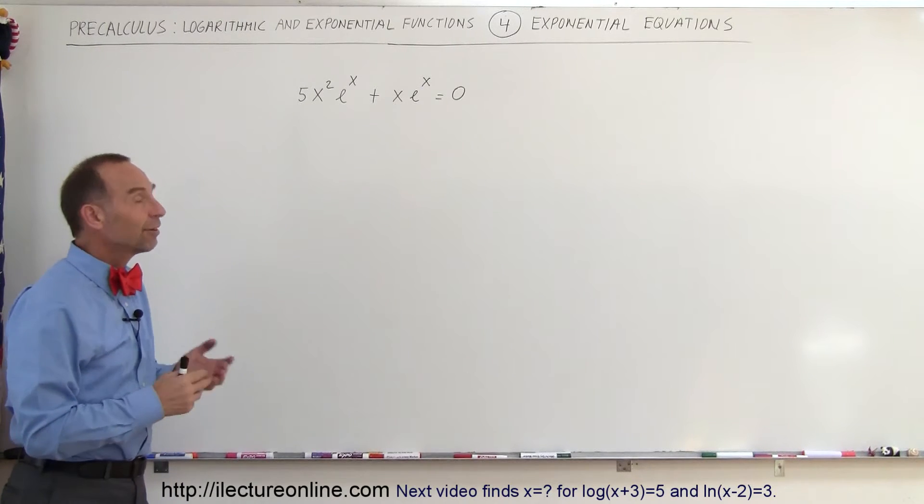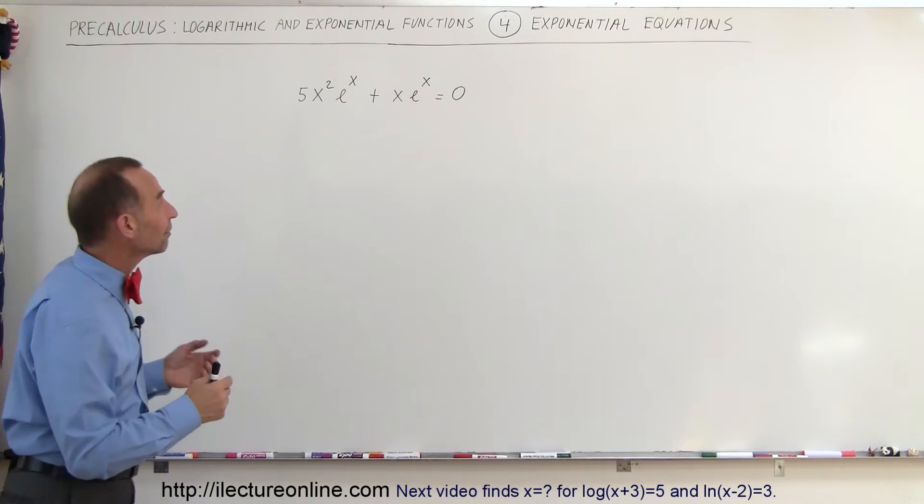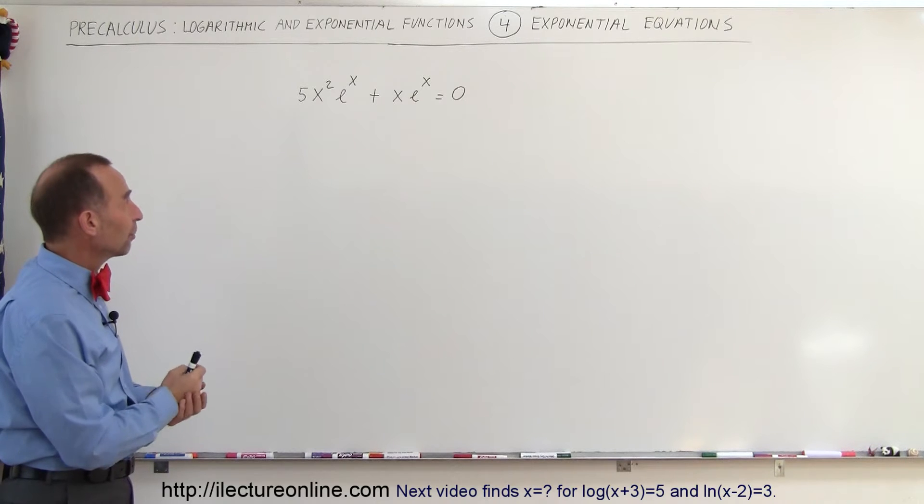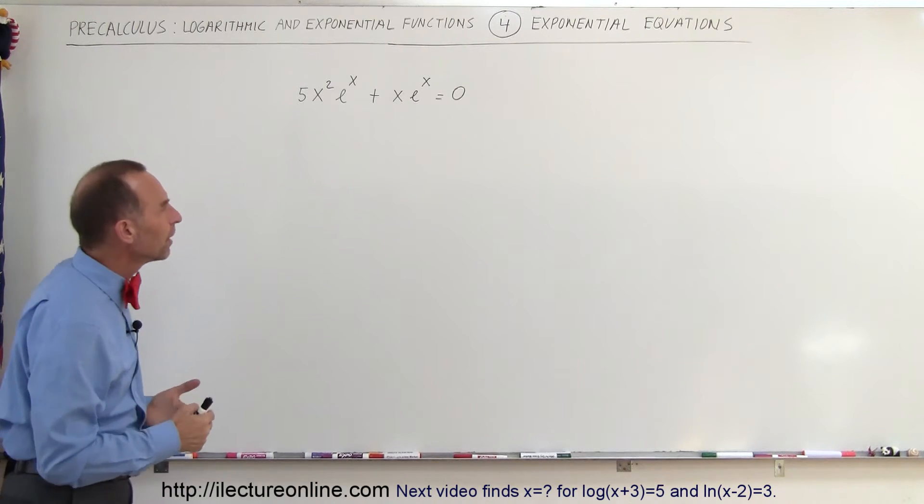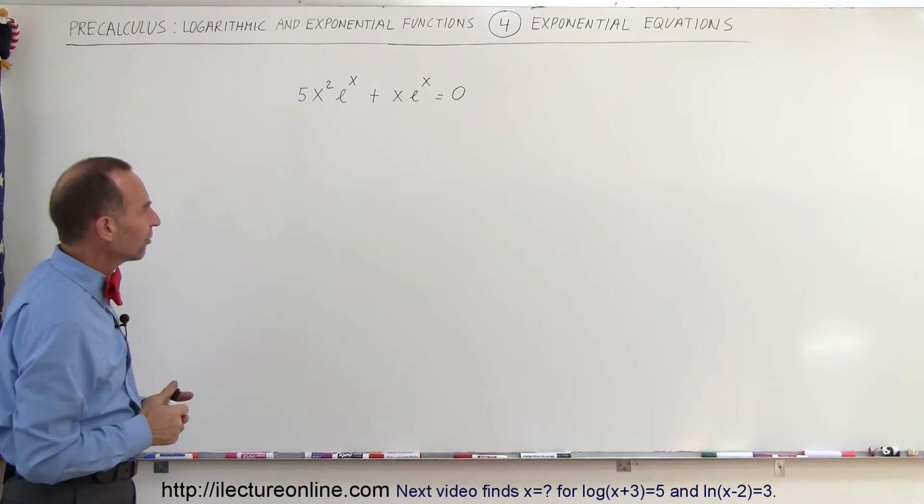Welcome to Electronline and here's a different kind of example where we have 5x squared e to the x plus x times e to the x equals 0, so it's another exponential equation. But how do we solve for x in this case?